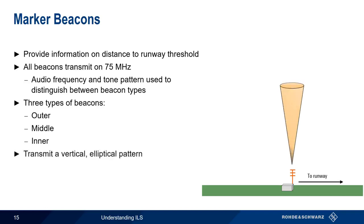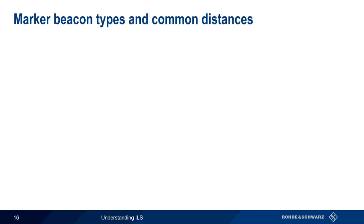Marker beacons transmit in a vertical, elliptical pattern, which means their signals are only received or heard when the aircraft is passing almost directly over them. As mentioned a moment ago, there are three types of marker beacons, all of which lie along the runway centerline.